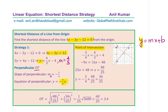Substituting: minus 3 over 4 times x equals to 4 over 3 times x minus 4. Multiply all terms by 12, giving minus 9x equals to 16x minus 48. Solving for x: 25x equals 48, so x equals 48 over 25. Now find the y value: y equals minus 3 over 4 times x, and substituting x as 48 over 25, we get y equals minus 36 over 25. So the point T is (48/25, −36/25).